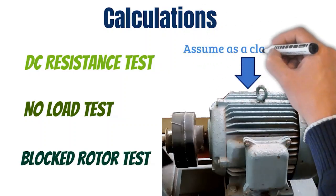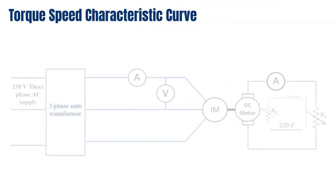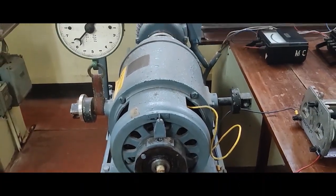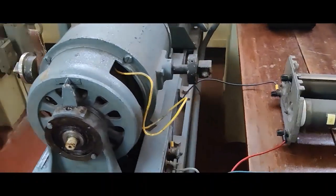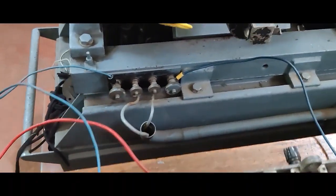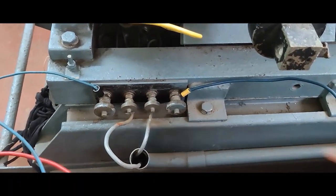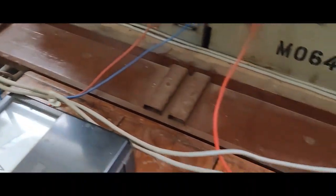We are now moving to obtain readings for the torque-speed characteristic curve. This is the circuit we are going to construct. This is the DC motor we are using, along with the torque gauge. The armature winding terminals and field winding terminals are identified here. The field winding terminals are connected to the DC supply, and the variable resistor R1 is also shown in the circuit.